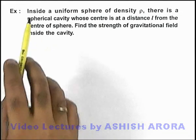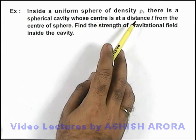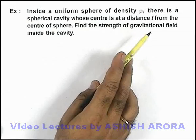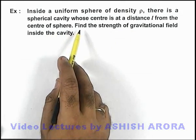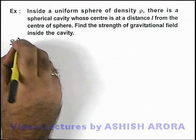In this example we are given that inside a uniform sphere of density ρ, there is a spherical cavity whose centre is at a distance l from the centre of the sphere, and we are required to find the gravitational field strength inside the cavity.